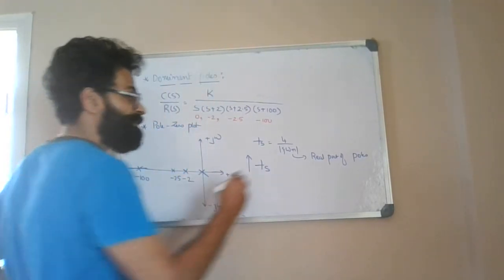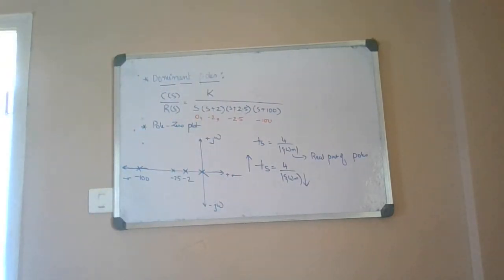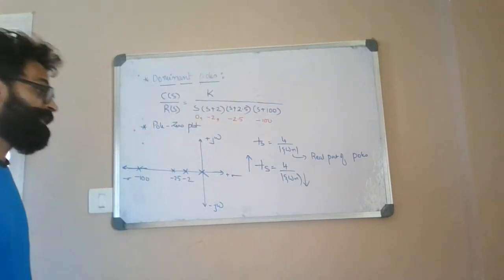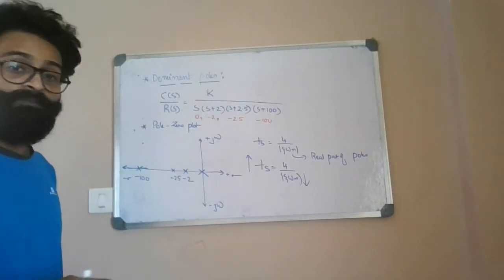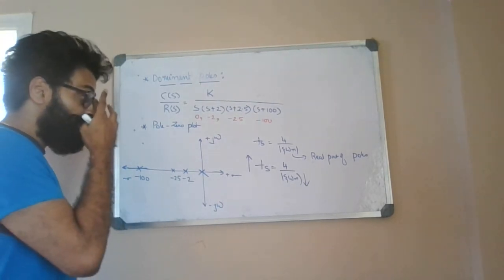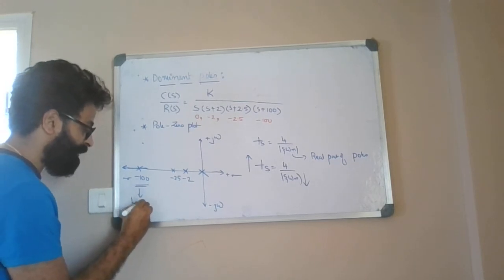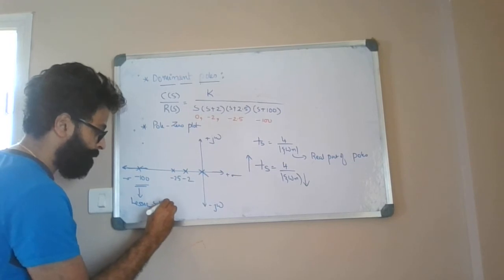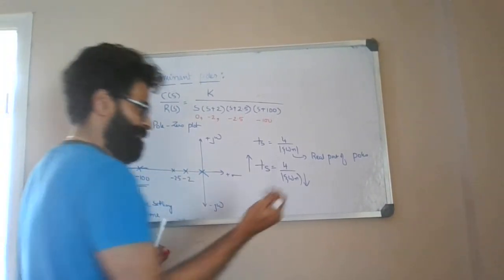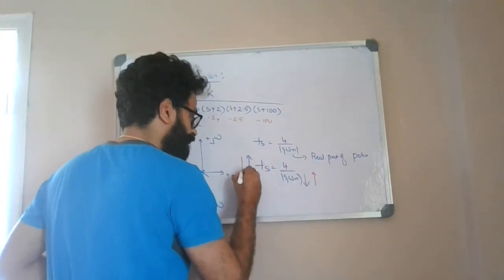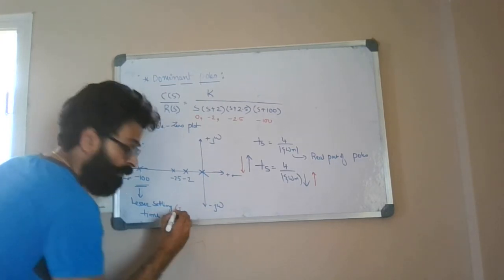If the zeta*omega_n value is very small, the system will take a larger settling time. The roots located far away from the imaginary axis take lesser settling time, because greater the value of zeta*omega_n, lesser will be the settling time. That is why these roots are called insignificant roots or insignificant poles.